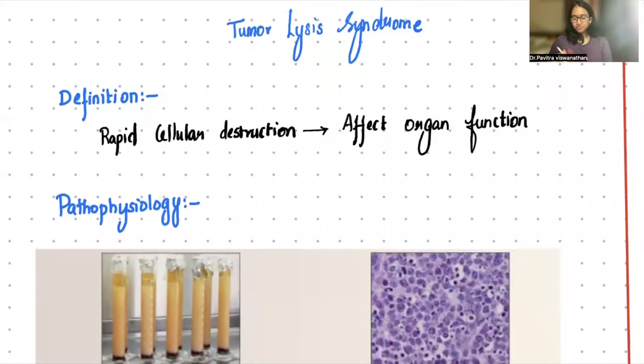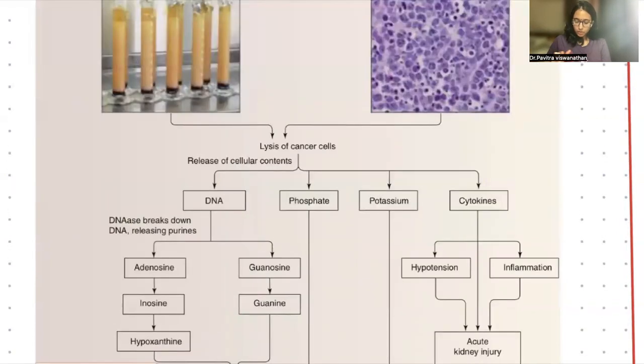This came in December 2022 for your exams. See what happens in tumor lysis syndrome, you have breakdown of the tumor mass that is present. It can happen spontaneously or it can happen after you start chemotherapy. It usually happens 2-3 days prior to starting of chemotherapy to up to a week after starting chemotherapy. If it happens before, it is spontaneous. If it happens after, it is chemotherapy induced. So this is the pathophysiology.